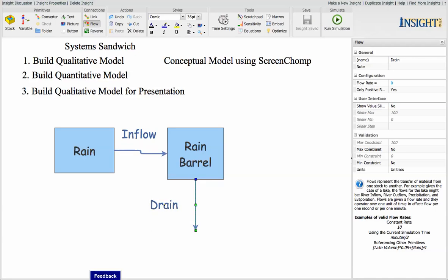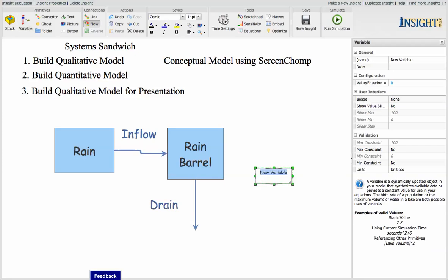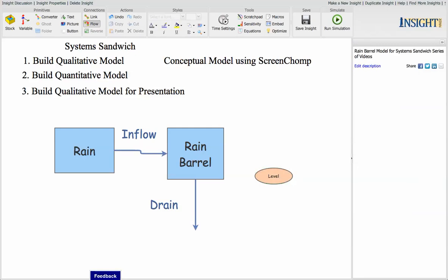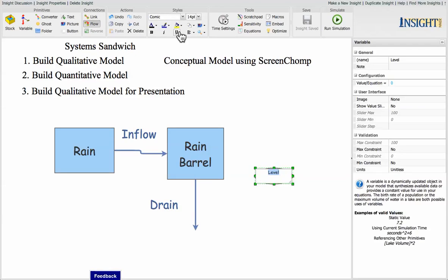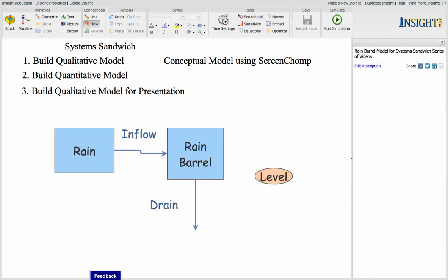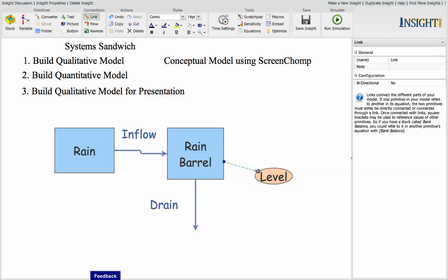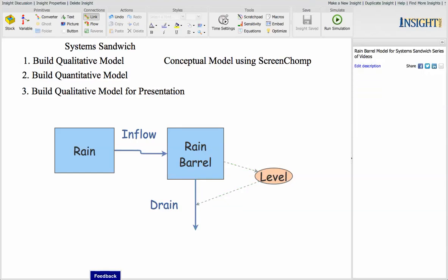And we're going to create a variable over here that's called the Level. So this becomes the Level of the Water in the Rain Barrel. Then we're going to click on the link, come down here, click on the Rain Barrel, link it up with the Level. So the information, this is an information link, it's not water flowing.